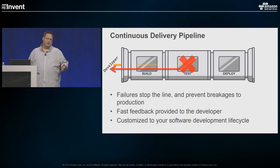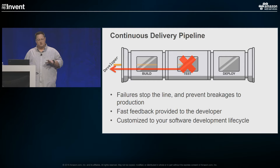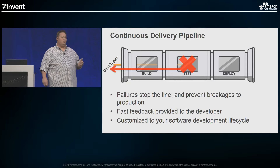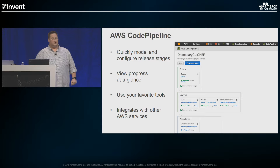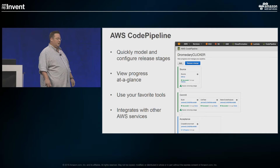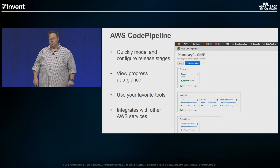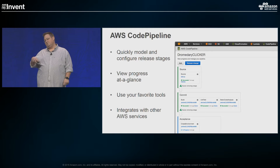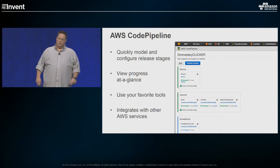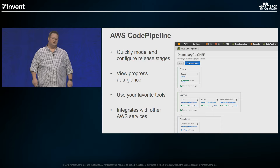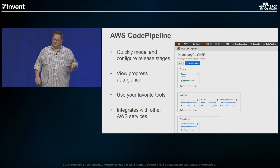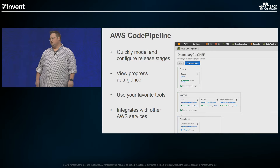Pipelines can also be customized to your software development life cycle. The common pipeline we talk about at AWS — build, test, deploy — is just a demonstration, but stages are unstructured and you can customize them to your own process. We have a service on AWS called AWS CodePipeline. It allows you to quickly model and create pipelines and stages inside a friendly GUI, or write JSON to implement the structure of stages. It gives you a view at a glance where your pipeline is running. It integrates with a lot of your favorite tools, and integrates seamlessly with other AWS services.